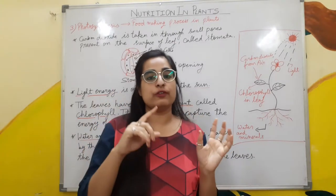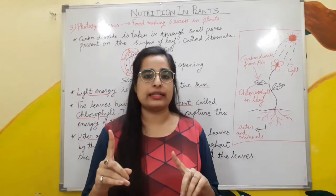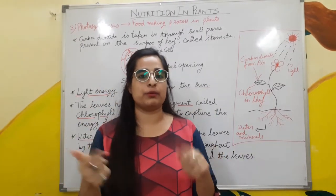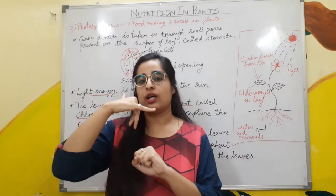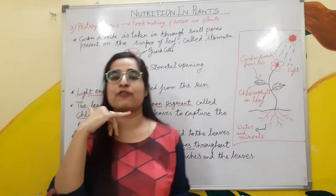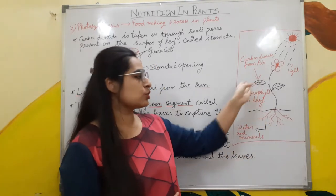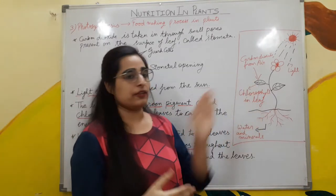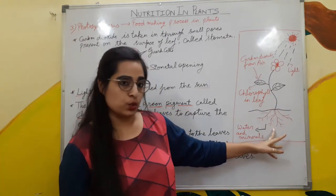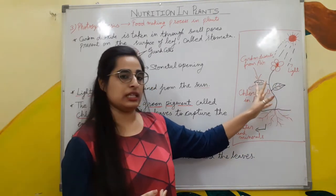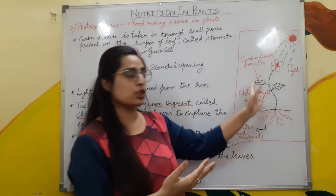For water and minerals, the leaf contacts the root. Suppose the leaf needs one ingredient — it will contact the root because the root can provide it. How will it contact? The leaf will call the root: 'Hello, can you please send me water and minerals? I am getting late to prepare my food.' The root will say: 'Okay, I am delivering it to you.' The root delivers water and minerals to the leaf through pipe-like structures present in the roots, stem, branches, and leaves. These pipe-like structures are called vessels, through which roots transfer water and minerals to the leaf. Minerals are always accompanied with water, which is why we write the term 'water and minerals'.